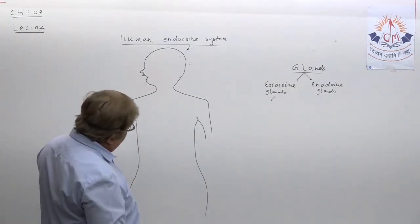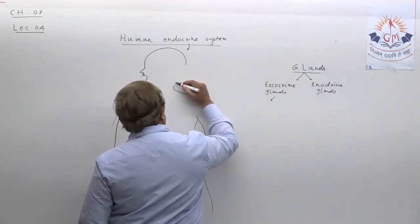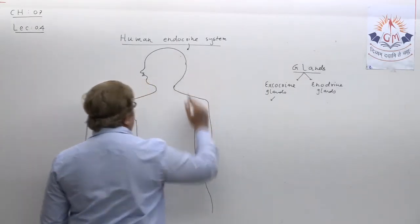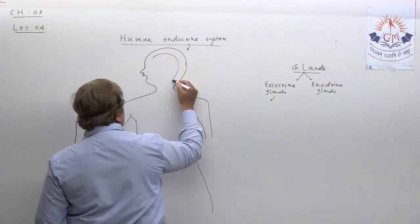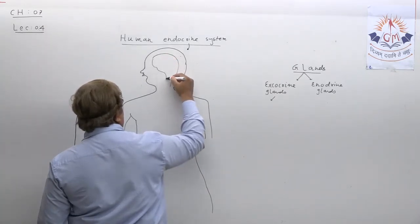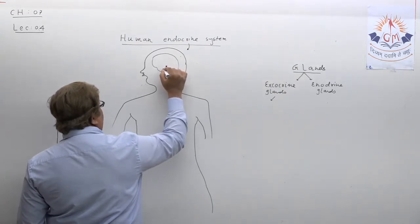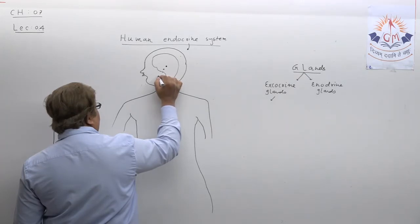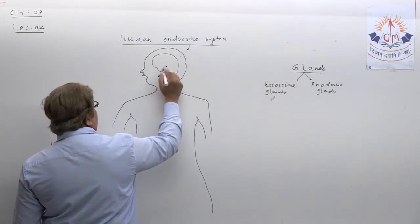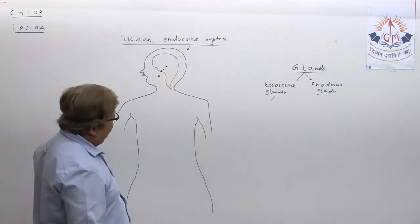Now suppose this is the human body, and we want to show various types of endocrine glands which are responsible for secreting hormones in our body. First draw a tentative diagram of the brain. Here you have to show three glands inside the brain — one, two, three — and another gland as well. The names are: pineal gland, thalamus, hypothalamus, and pituitary gland.